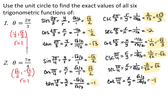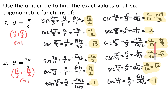For 2 pi over 3, the coordinate point is (negative 1 half, root 3 over 2) with radius 1. Sine is root 3 over 2. Cosine is negative 1 half. Tangent is root 3 over 2 divided by negative 1 half, which is negative root 3. Cotangent is negative 1 half over root 3 over 2, giving negative 1 over root 3 or negative root 3 over 3 rationalized. Secant is 1 over negative 1 half = negative 2. Cosecant is 1 over root 3 over 2 = 2 root 3 over 3.